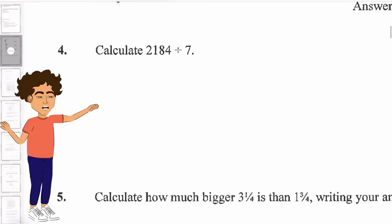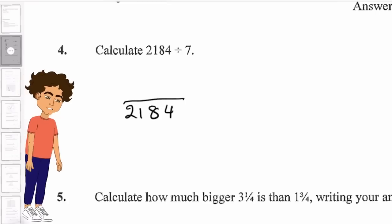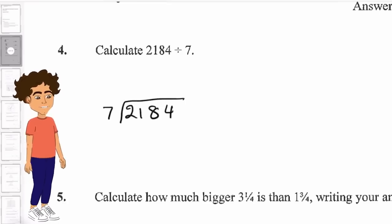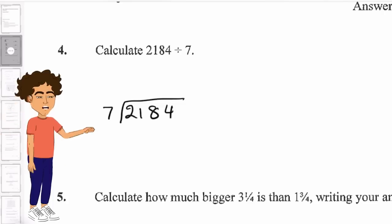Over to question four. 2184 divided by 7. So this is where we use our bus stop method. Remember that the first number or your numerator would always go under the bus stop.